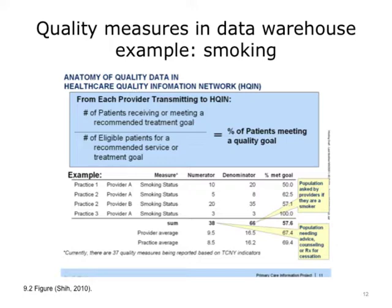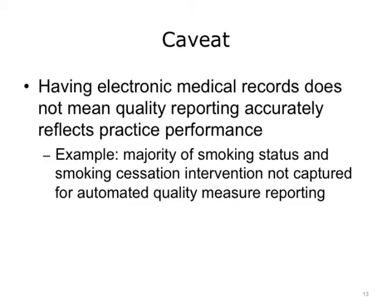In this example, data is shown about smoking status documentation for patients who visited four providers at three practices. The data can be reported as an average of the aggregate for the measure, or average by provider, or average by practice. Smoking status is one of 37 quality measures reported to PCIP, based on New York City's top health goals as part of Take Care New York. When quality measures are extracted from electronic health records, a caveat remains: having electronic records doesn't mean quality reporting accurately reflects practice performance.